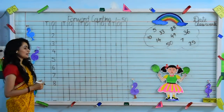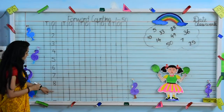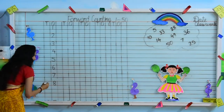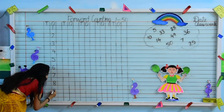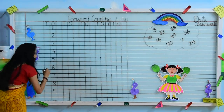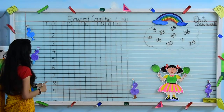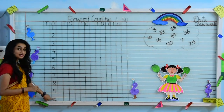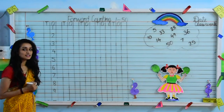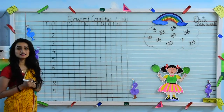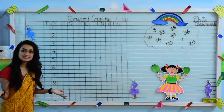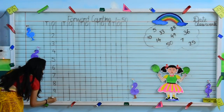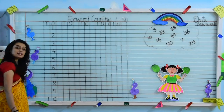What comes after 8? After 8, 9 is the next digit. So we will write 9 over here. 7, 8, 9 — and the last digit is? Yes, it is 1, 0 — 10.